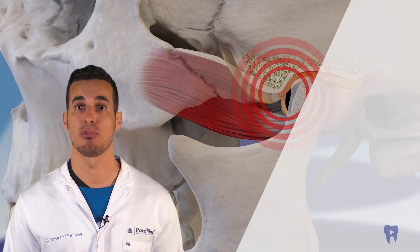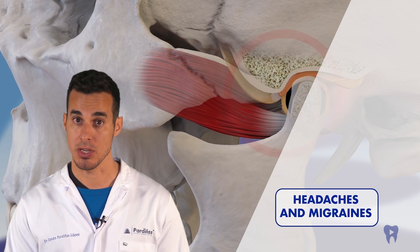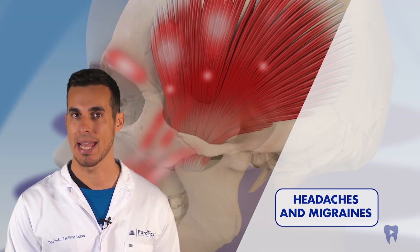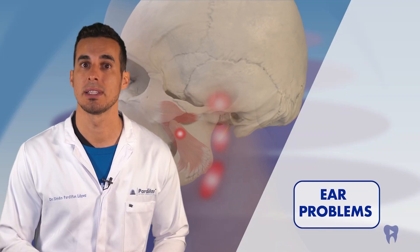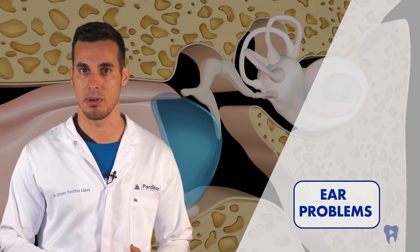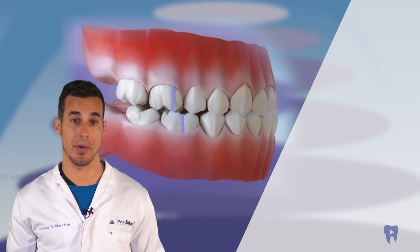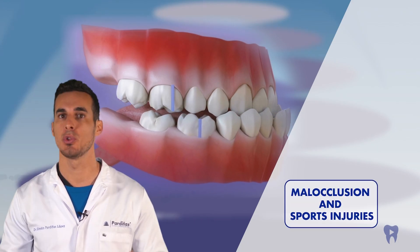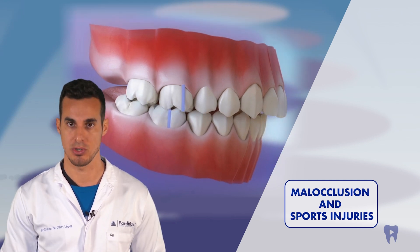TMJ problems are frequently associated with headaches, including migraines. Tension in the jaw muscles can contribute to tension in the muscles of the head and neck, triggering pain. Disorders of this joint can cause symptoms that affect the ear, such as pain, tinnitus, or balance problems, due to the proximity of the TMJ to the ear. Malocclusion or incorrect bite can have an indirect impact on sports injuries due to its influence on balance, postural stability, and muscle tension.